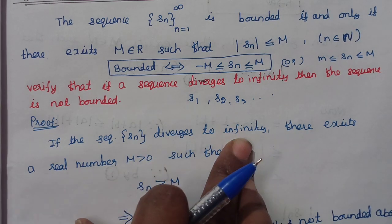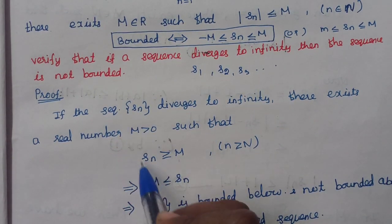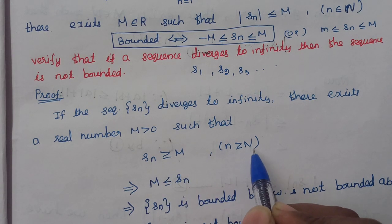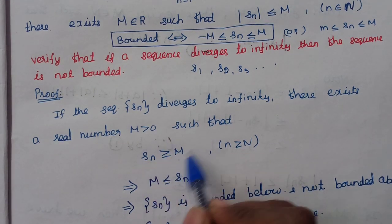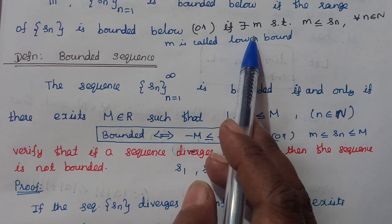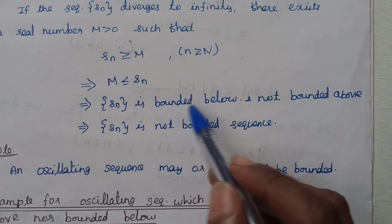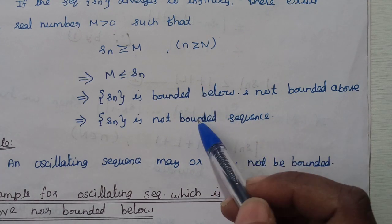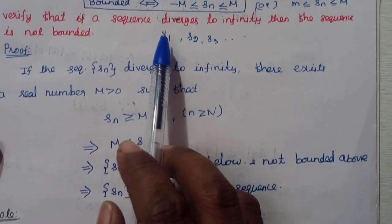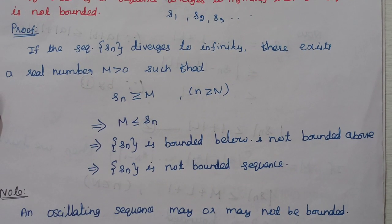If the sequence Sn diverges to infinity, there exists a real number M > 0 such that Sn ≥ M at a certain stage. So M ≤ Sn, meaning M is a lower bound. The sequence is bounded below but not bounded above, so it is not bounded. Diverges to infinity means not bounded.